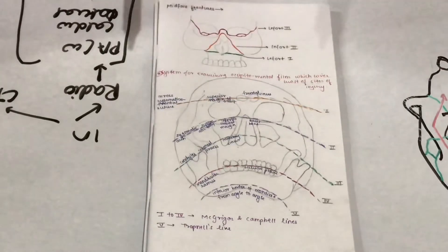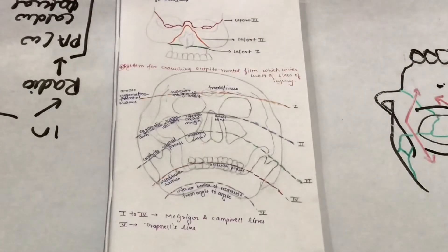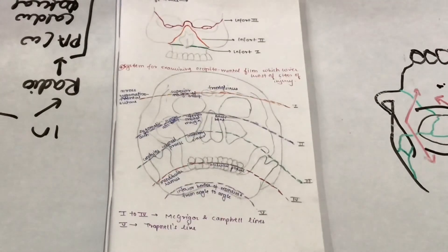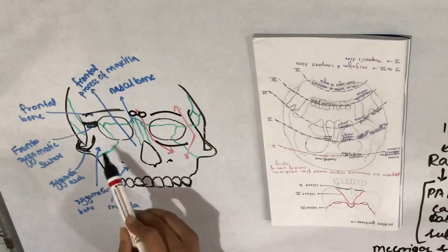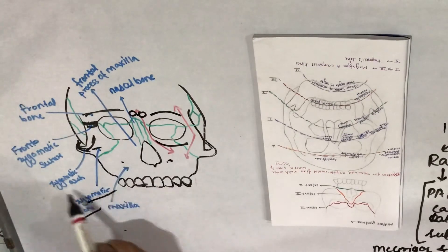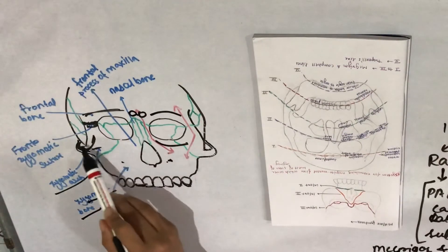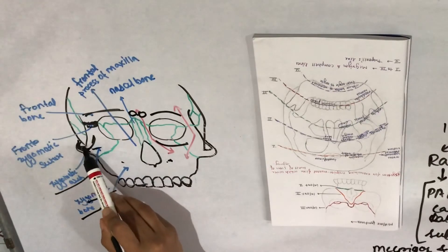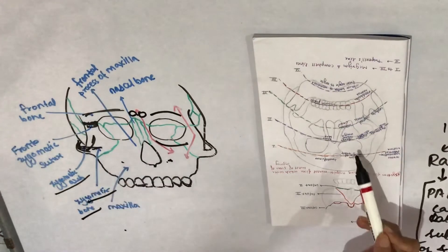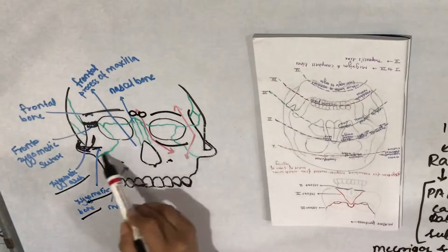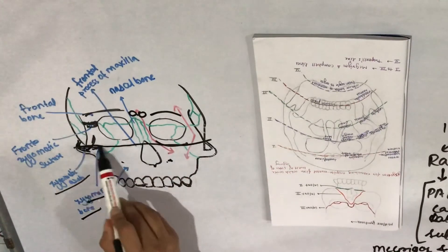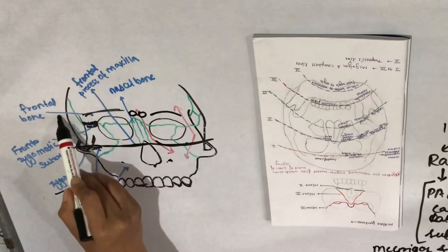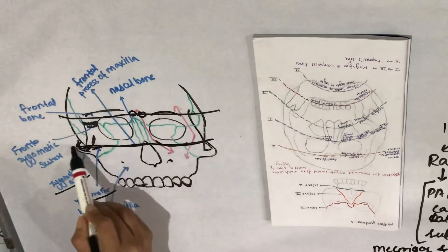The second line crosses the zygomatic arch, zygomatic body, inferior orbital margin, and nasal bone. This line follows from the zygomatic arch through the zygomatic bone, along the inferior orbital margin, and to the nasal bone.